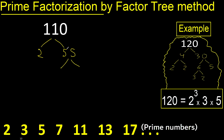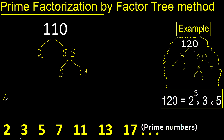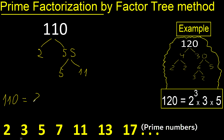For 55, 5 multiplied by 11 is 55. Since 5 and 11 are both prime numbers, we finish those branches. Therefore the prime factorization of 110 equals 2, 5, and 11.